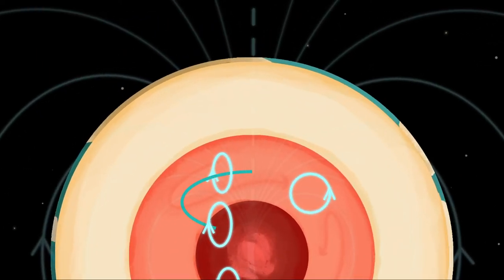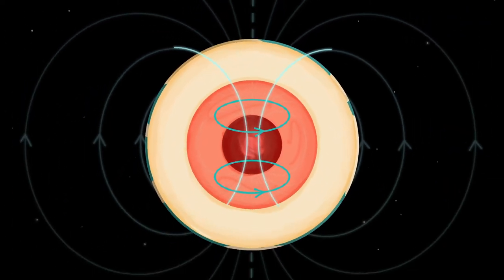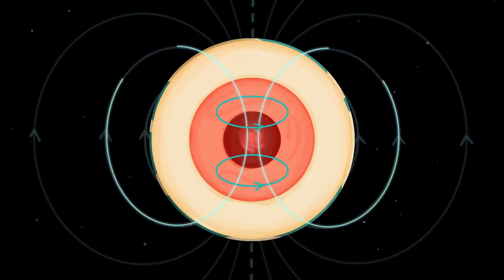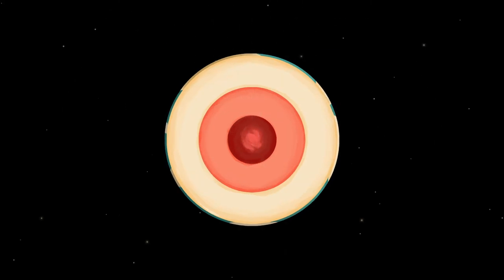If the fluid motions occur in such a way that the newly generated magnetic field adds on to the existing one, then we have a working dynamo that keeps maintaining a planet's magnetic field over billions of years. On Earth, the conducting fluid that produces the dynamo is in the outer core, which is made mostly of iron, nickel and some other light elements like sulfur.